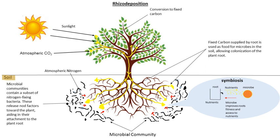Root-associated microbes include fungi, bacteria, and archaea living within or on the surface of roots, as well as in the rhizosphere. Symbionts associated with plant roots subsist off of photosynthetic products from the plant host and can exist anywhere on the mutualist-parasite continuum.